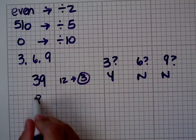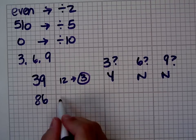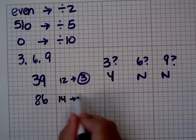Let's look at the number 86. 8 plus 6 is 14. 1 plus 4 is 5.